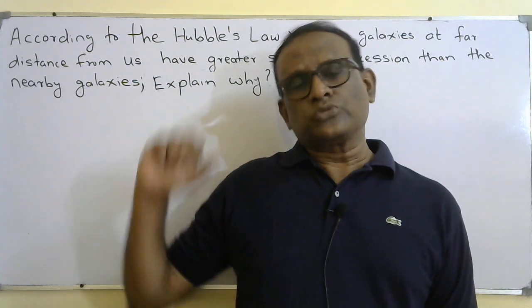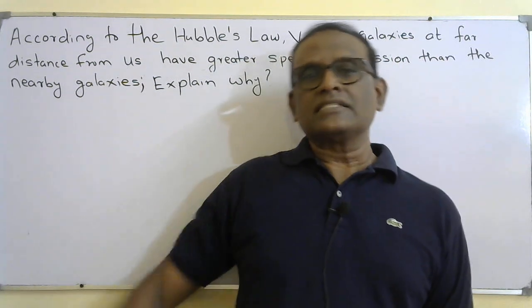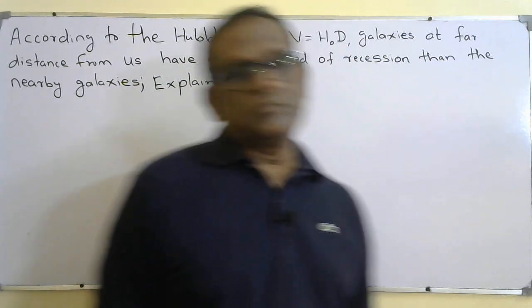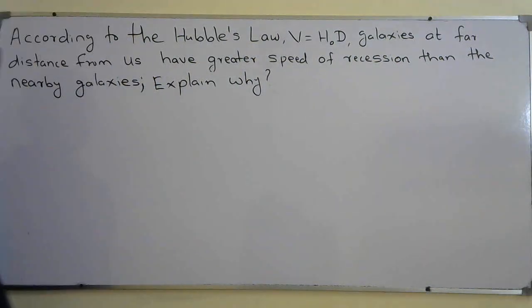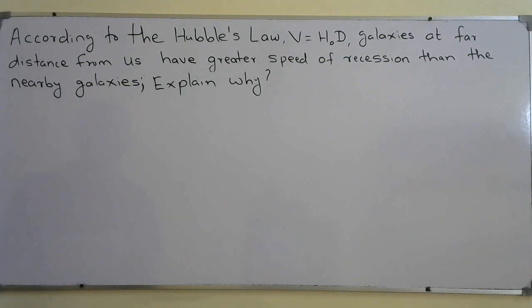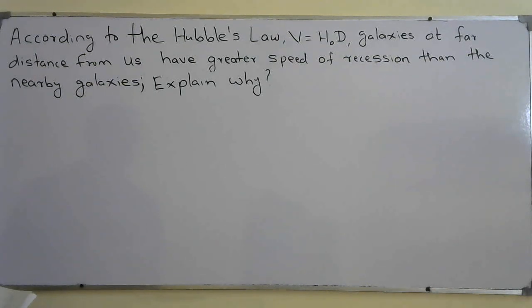Students normally ask this question, though it has not appeared in past papers. According to Hubble's law, V equals H0 times D, galaxies at far distances from us have a greater speed of recession than nearby galaxies.